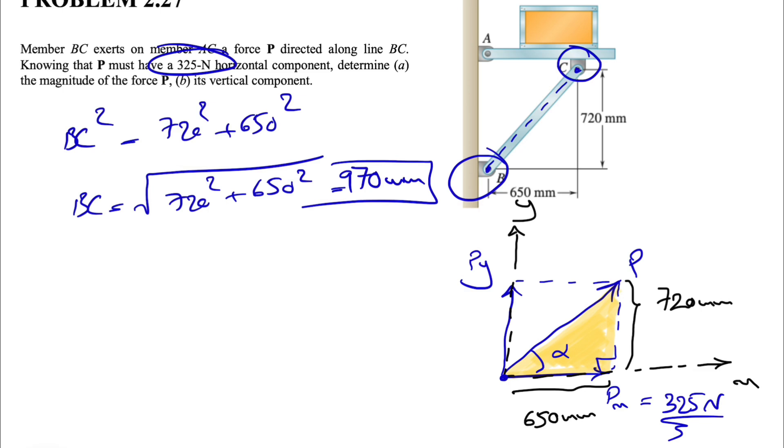Whenever we have a pin, we know that we have both x and y components. If you get a chance to look at the questions in the next chapters, you'll see the different reactions at different supports that we have. Pin is one of those supports that we have both x and y components, and there is no moment at that support. Since it's a pin, we don't consider any friction and it can freely rotate. That's why we don't consider any moment. When we have a fixed support, we need to consider a moment as well. I just wanted to bring it up in case you're not going through this question chronologically.